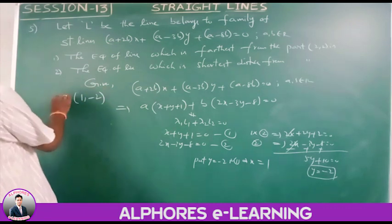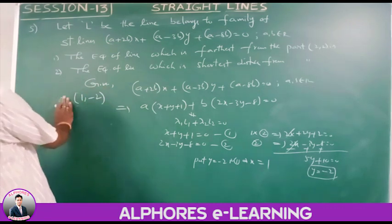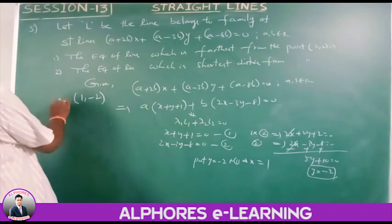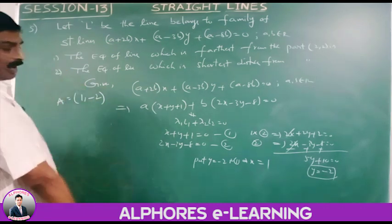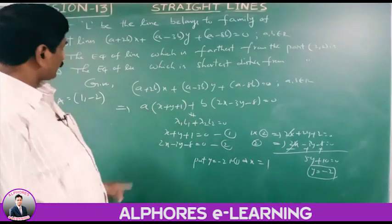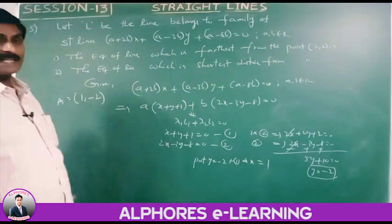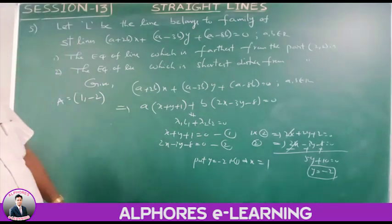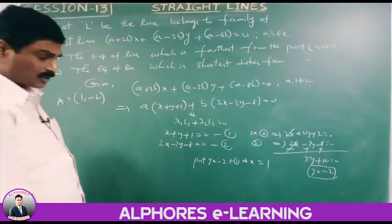The point of intersection of the family of lines is A equals (1, minus 2). This is the point of concurrency.